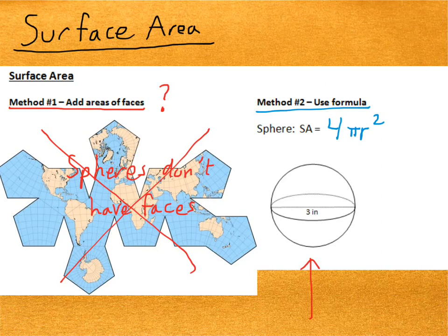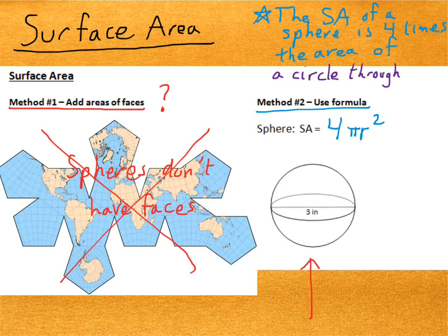So, 4 pi r squared. It's important to note that this tells us that the surface area of a sphere is 4 times the area of a circle through its center.